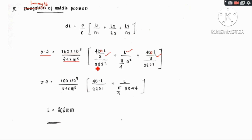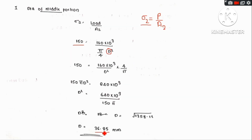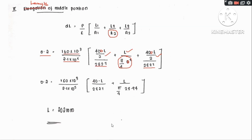Now with A1, A2, and A3 known, we calculate all values and substitute into the elongation equation. From the diameter formula using A2, we find the middle section area. A2 = π/4 × d2², giving a value of 36.85 for the diameter calculation. We then find the diameter and length of the middle portion.